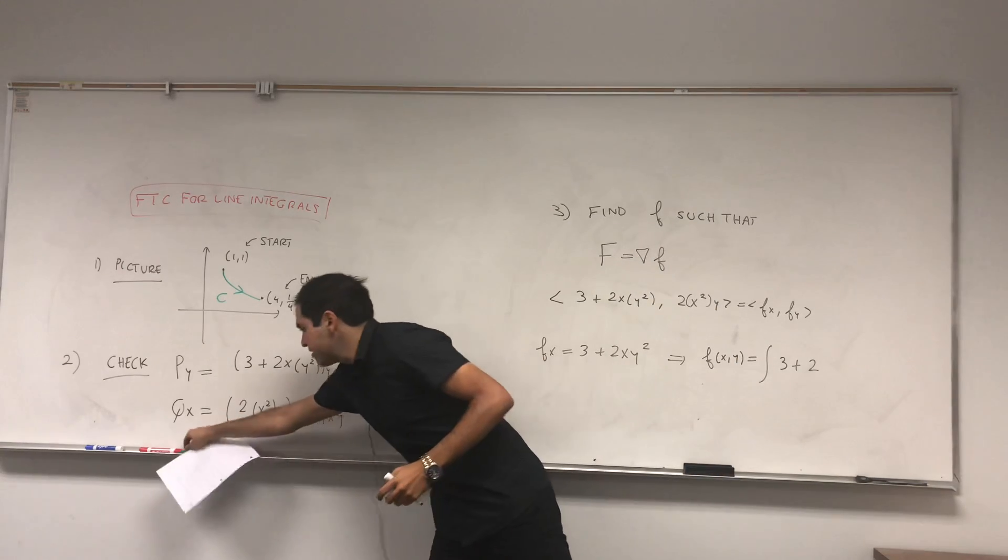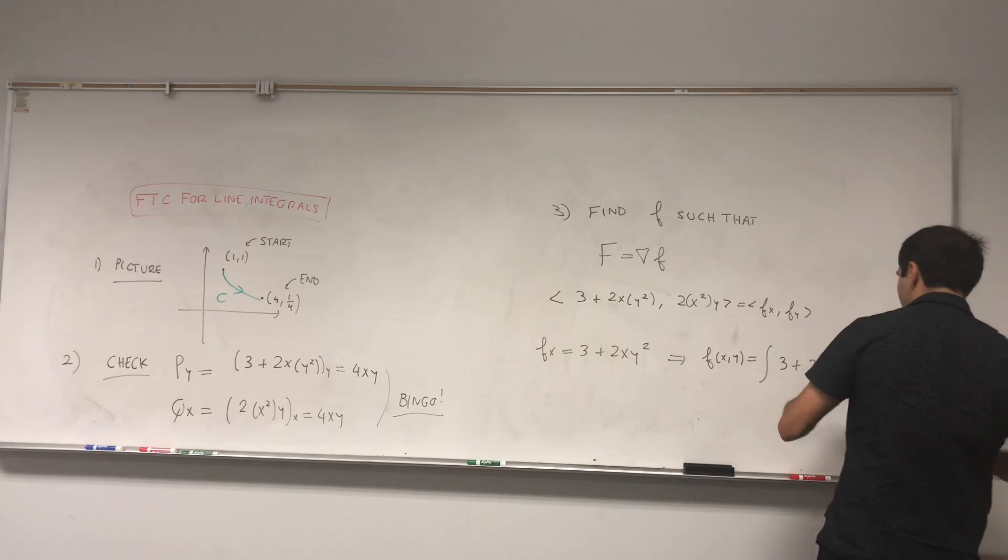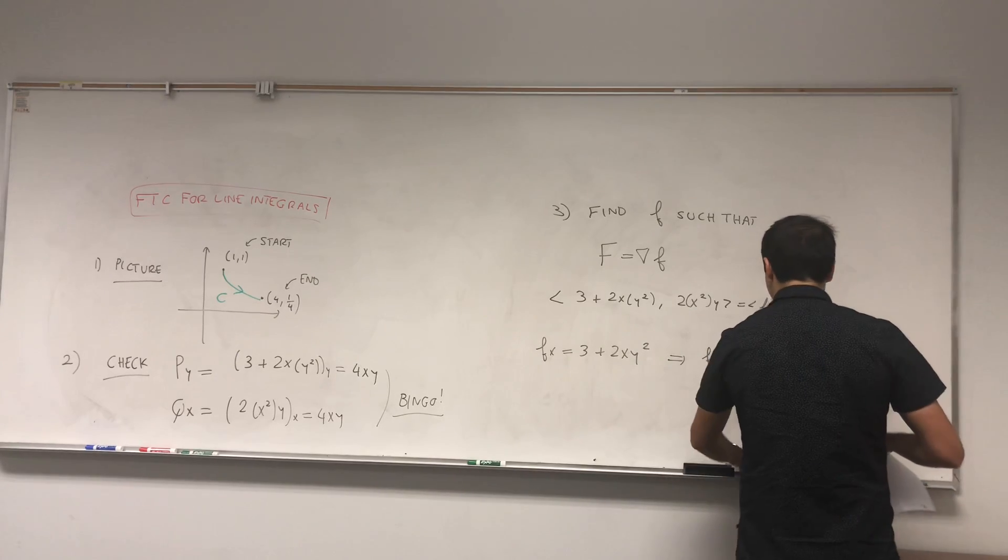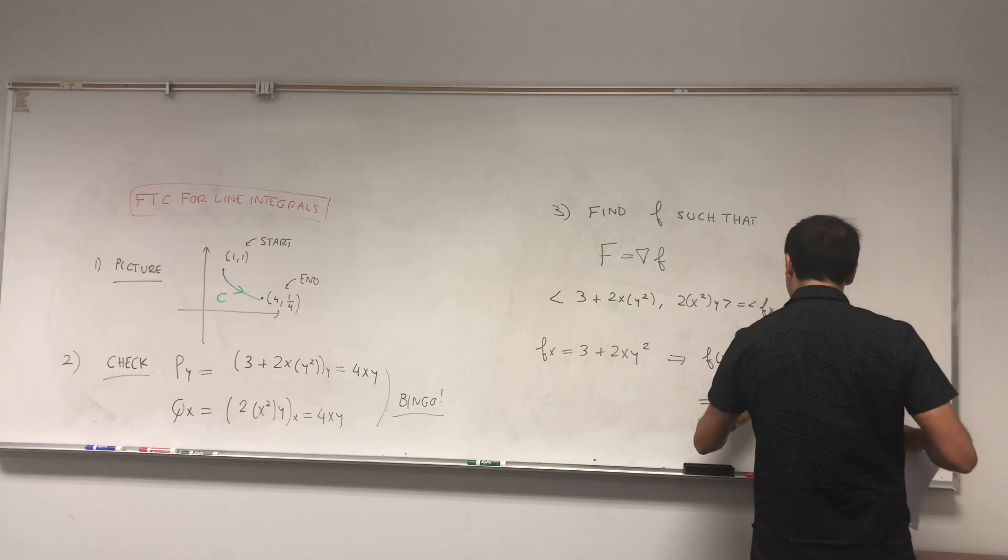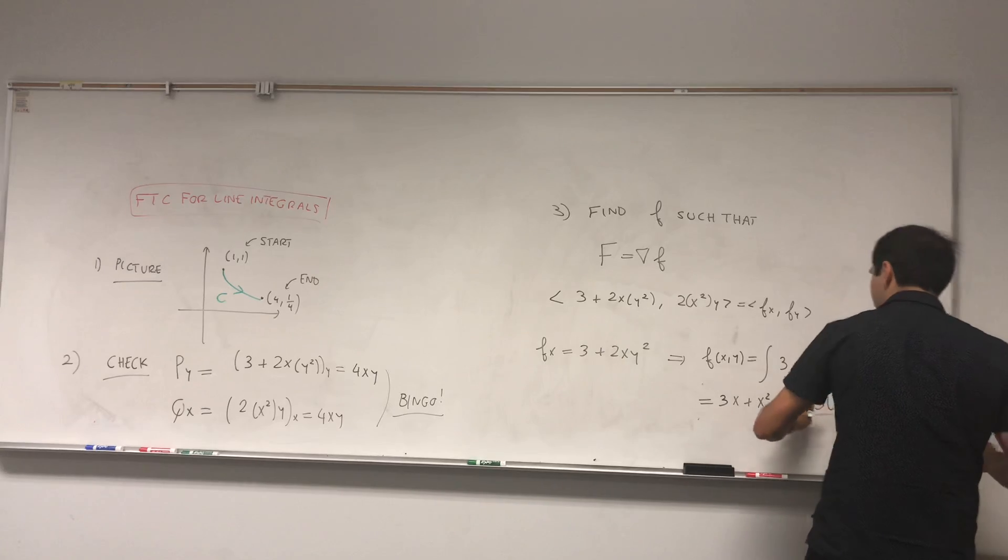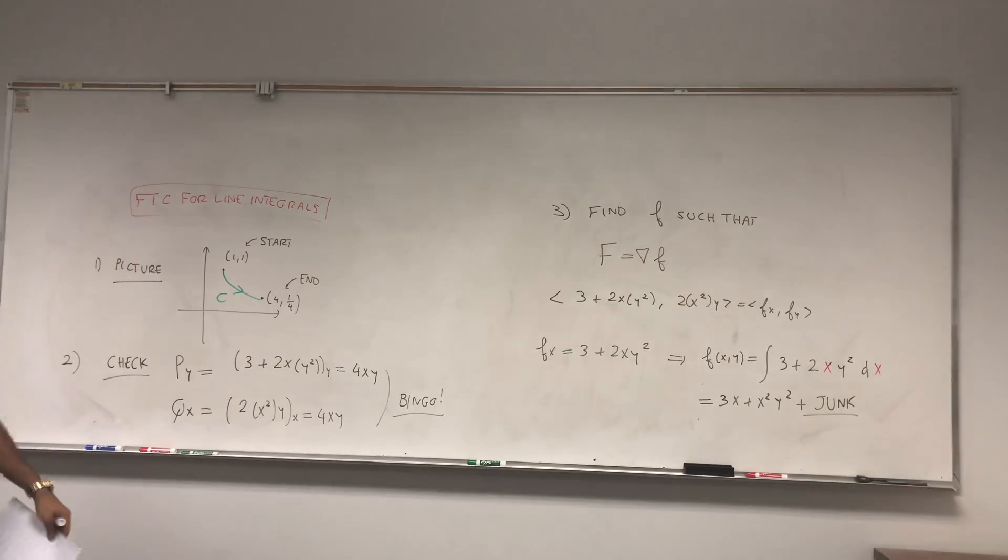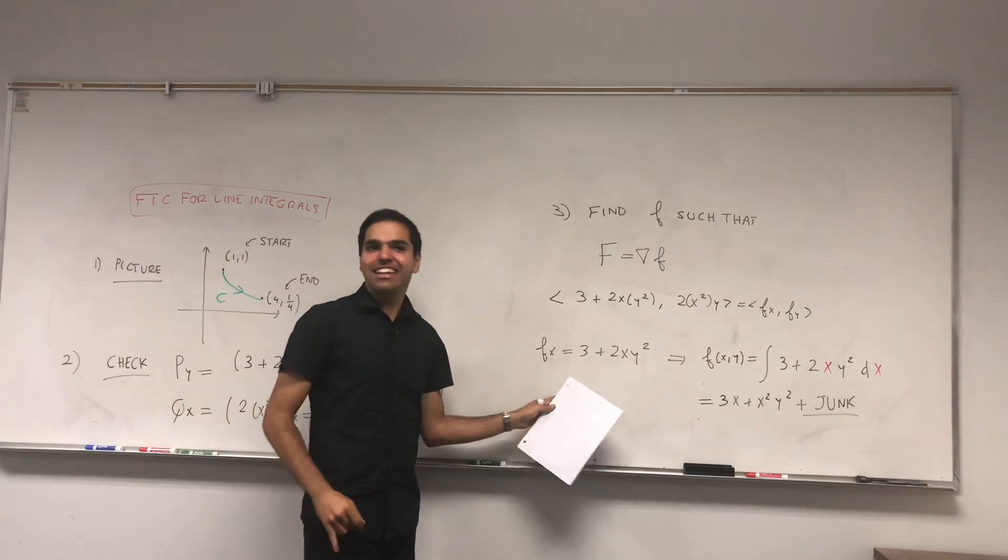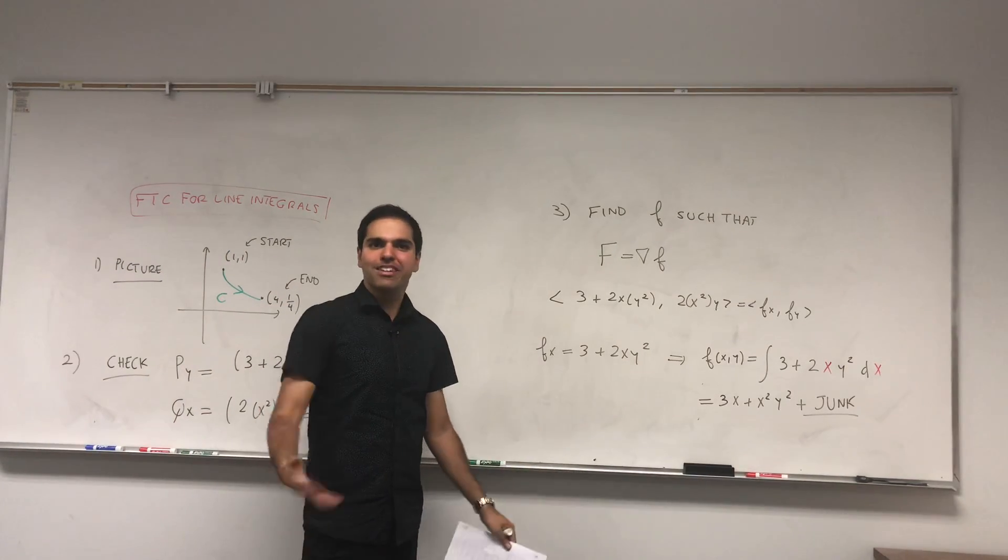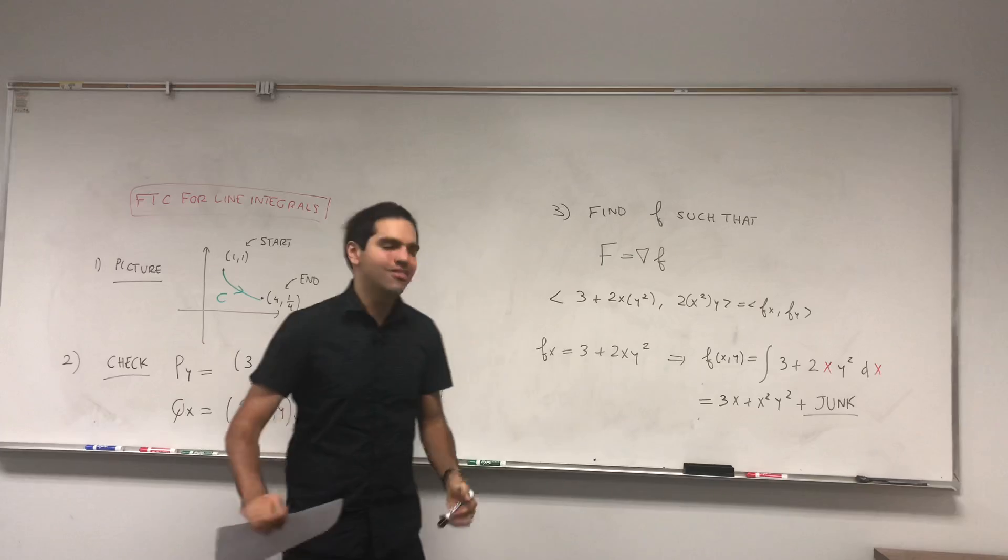So f of xy is the integral of 3 plus 2xy squared dx. And what this becomes, you get 3x plus x squared y squared plus some junk. And I know some people are like, oh but this is a g of y. But I don't care. Let me give you, this technique works 99% of the time. Of course sometimes it becomes impossible to integrate, but just let it be junk and then it works most of the time.